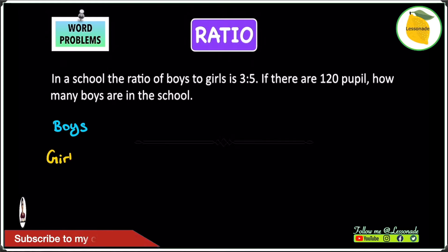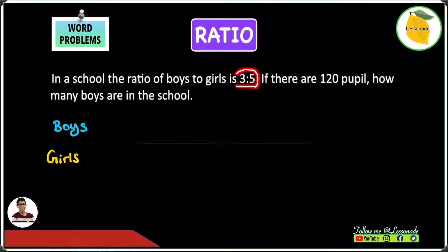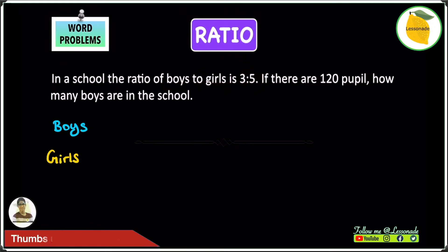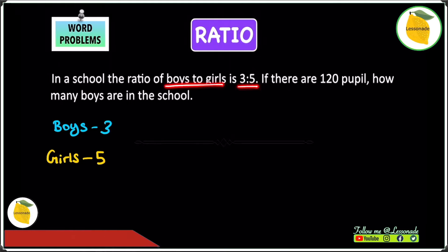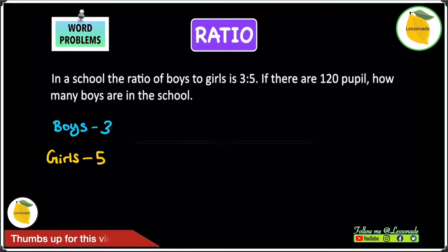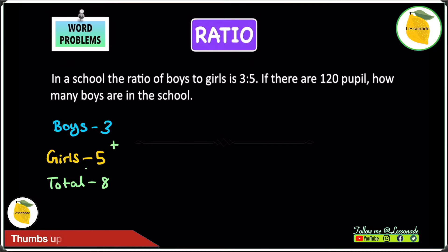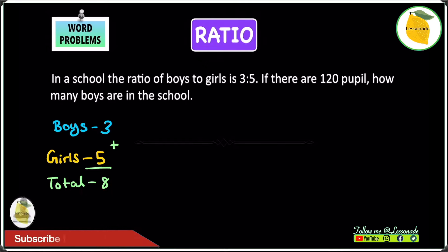The ratio is 3 to 5 for boys to girls, so we write 3 for boys and 5 for girls. Now let's find the total of the ratio parts: 3 plus 5 gives us 8, so the ratio total is 8.